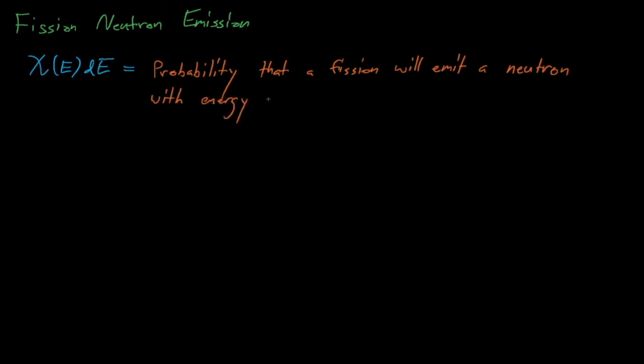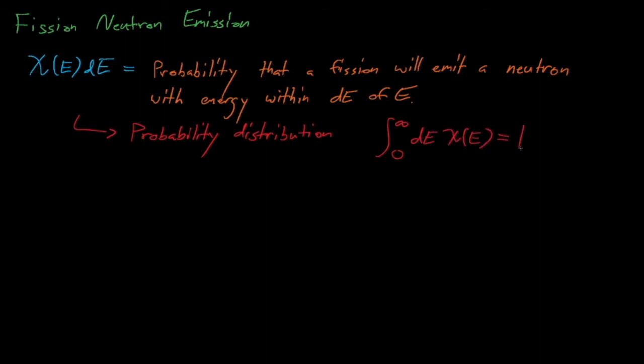Getting back to our fission physics, let's discuss the neutrons that are emitted from the fission reaction. The chi-distribution, or chi-spectrum, describes the energy spectrum of neutrons emitted from fission reactions. Chi of E times dE is the probability that a neutron emitted from fission will have energy within dE of energy E. Because chi is a probability distribution and is normalized, the integral of chi of E over all possible neutron emission energies equals 1.